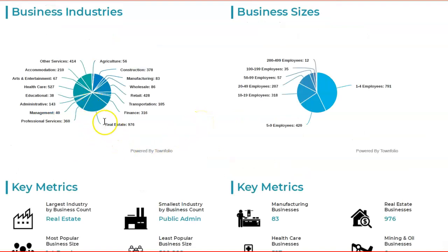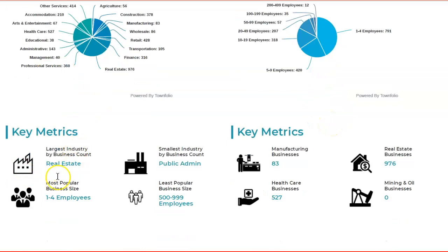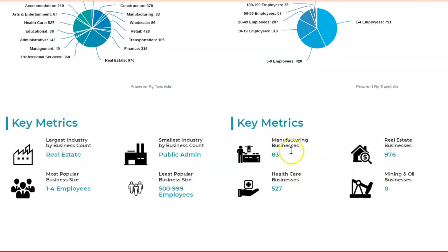When it comes to business industries, real estate has a big chunk of the industries, followed by wholesale, healthcare, and other services. Small businesses between one and four people are the most popular business size in the community. Real estate is the largest industry by business count, and the least popular business size is between 500 and 999 employees, so large corporations are not very common. There are 83 manufacturing businesses, 527 healthcare businesses, 976 real estate businesses, and no mining operations in Sault Ste. Marie.